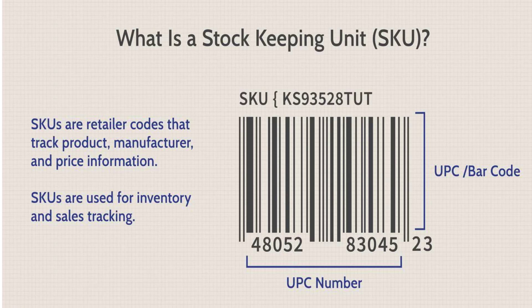For example, if a store sells shirts, it is necessary to generate a different SKU for each model available, considering the color, size, model, or any other aspect that characterizes that piece.